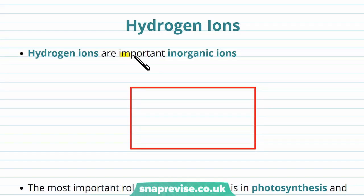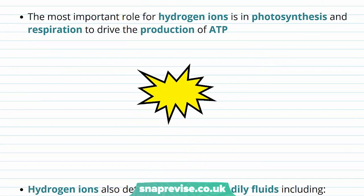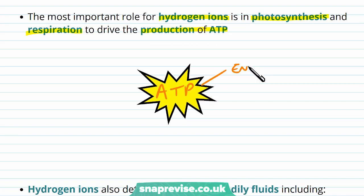Hydrogen ions are important as an inorganic ion in many organisms. The formula for hydrogen ions is simply H+, so because they're positively charged they are cations. The most influential role that hydrogen ions have is in photosynthesis and in respiration, which are kind of the reverse reactions of each other, in driving the production of ATP. ATP is essentially the energy currency of most cells, and this relies on the presence of hydrogen ions.